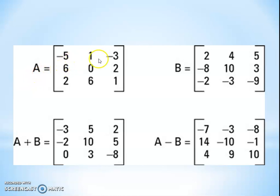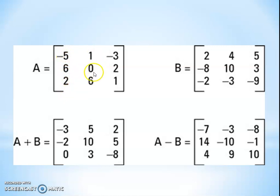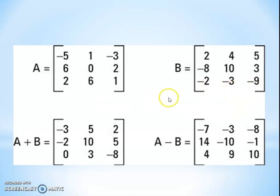First example. A equals [-5, 1, -3; 6, 0, 2; 2, 6, 1], B equals [2, 4, 5; -8, 10, 3; -2, -3, -9]. Both matrices have the same order 3 by 3. A has rows: -5, 1, -3 first row; 6, 0, 2 second row; 2, 6, 1 third row. B has rows: 2, 4, 5 first row; -8, 10, 3 second row; -2, -3, -9 third row.